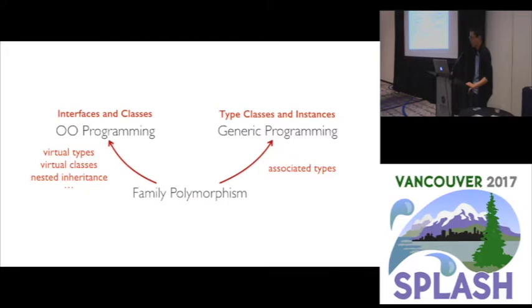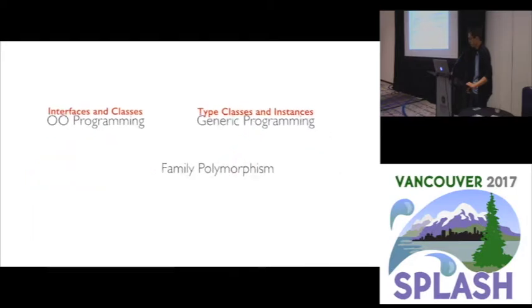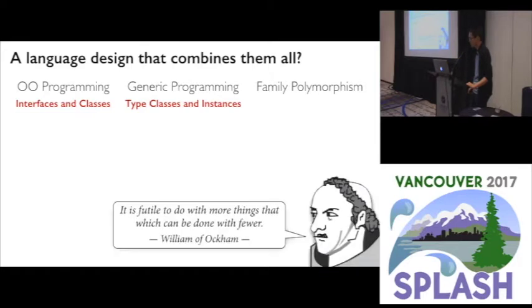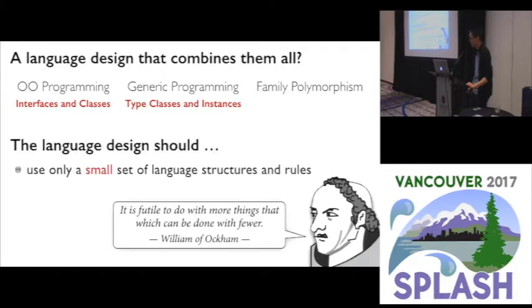Both styles of programming have acquired a kind of polymorphism called Family Polymorphism, which appears in various forms in various languages. With Family Polymorphism, a group of interrelated types and classes can co-evolve with their relations managed polymorphically. Given all this desirable expressive power, the natural question is: can we combine all of them into a single language design so that programmers can have the right set of language features to choose from when faced with different programming challenges?